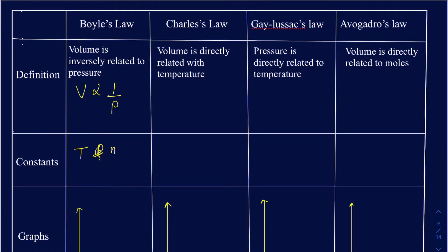In Charles' Law, volume is directly related to temperature: if volume goes up, temperature also goes up, while keeping pressure and moles constant. A simple example: if you fill a balloon with helium in the evening, overnight the temperature drops and by morning the size of the balloon will have decreased. So if temperature goes down, your volume also goes down.